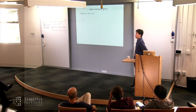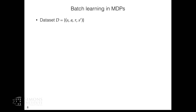Now we go to the learning setting — learning the policy from samples. The dataset is a bag of tuples: state, action, reward, next-state. For simplicity, I'll assume the IID setting of RL, where the state-action pairs are drawn IID from a fixed distribution μ — the data distribution. We need some assumptions on this distribution; basically we need it to fully cover the state-action space. Once you draw a state-action pair, you generate the reward and random next state according to the MDP dynamics.